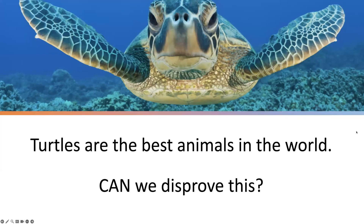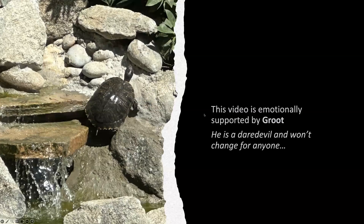'Turtles are the best animals in the world.' Can we disprove this? Obviously not. This is a judgment — a subjective claim. How do you identify 'best'? That's going to vary depending on who you talk to. So this is not something that's falsifiable. Again, falsifiability is all about: are you able to disprove it? Not is it true or false — are you able to disprove it? So when you get a claim, think about whether there is an observation you could make that would disprove it. That is the end of this video — feel free to reach out with questions.